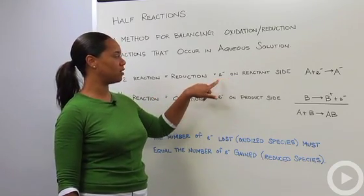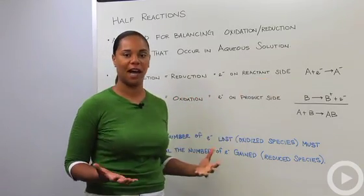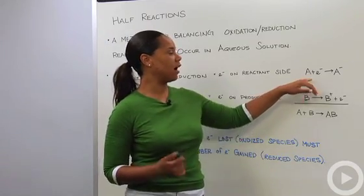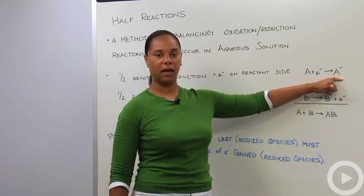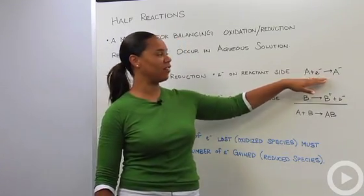In illustrating reduction, that means the electrons, denoted here as e minus, will show up on the reactant side. If I was writing a hypothetical reaction, I would say A plus an electron gives me A minus, and that would illustrate that A has been reduced.